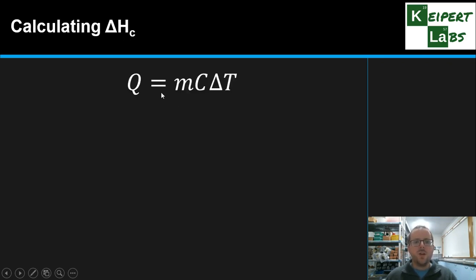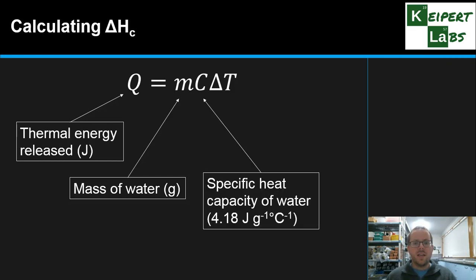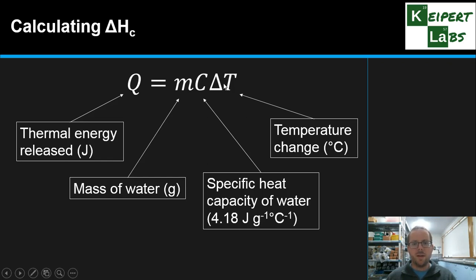So we're going to use Q equals MC delta T as the formula to look at how much energy goes into the water. This is a formula that we've seen before, but just reminding you about the different parts. So the Q is our thermal energy released, measured in joules. M refers to the mass of our water. C refers to that value called the specific heat capacity of water, or 4.18. And delta T is our temperature change in degrees Celsius. So multiplying these three values together, C being a constant, then gives us the amount of energy that was absorbed by the water, and therefore how much was released by the fuel.